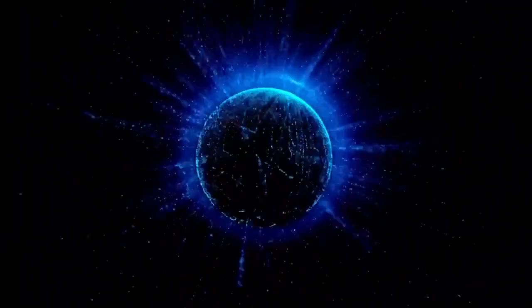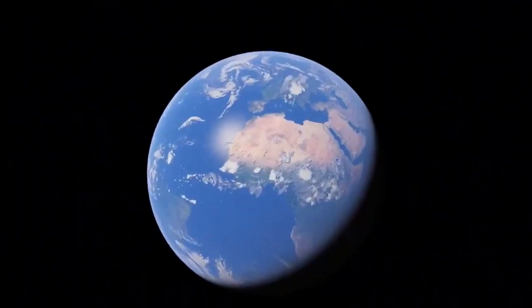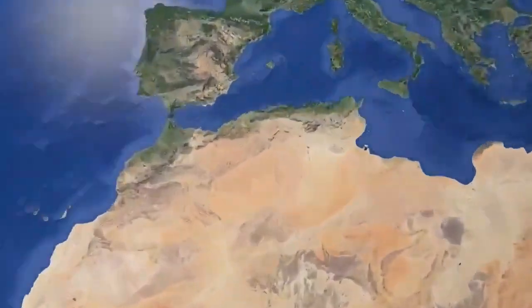This vast bubble, powered by the solar wind, extends roughly 11 billion miles from the Sun, encapsulating the Sun, all eight planets, and a significant portion of the solar system's outer regions.